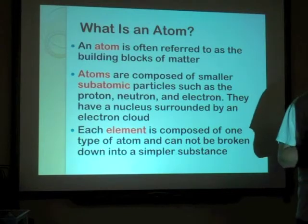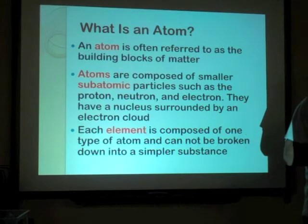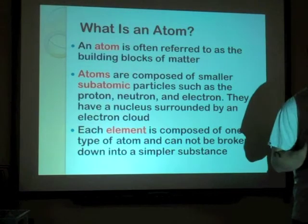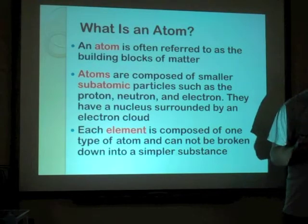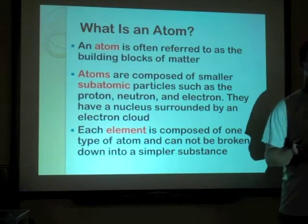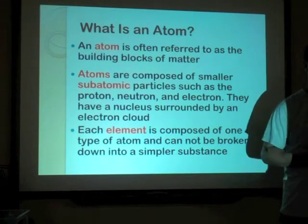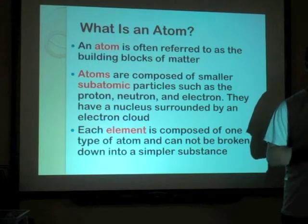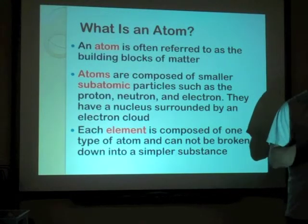Each element is composed of one type of atom and cannot be broken down into a simpler substance. So if you have gold, it's not going to be able to be changed to silver. Way back when chemistry first started becoming a science, there were people called alchemists. The deal with the alchemists was they were trying to get rich by turning cheap metal into gold — they would get lead and think, if we could turn lead into gold, we'll be super rich overnight.